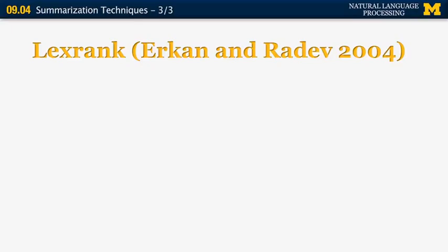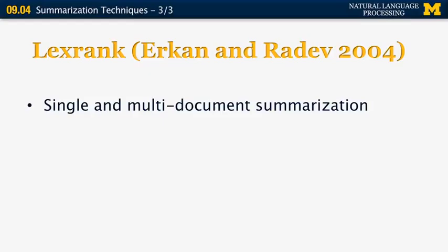Now the next paper is by Erkan and Radev, 2004. It was published in the Journal of Artificial Intelligence Research or JAIR. And this was the first paper on a method based on random walks for multi-document summarization. That technique also works for single document summaries. So the idea is something called lexical centrality. Lexical centrality means that if a sentence is likely to be visited during a random walk process on a similarity graph corresponding to all the sentences in the set of documents, then that sentence is worthy of including in the summary.